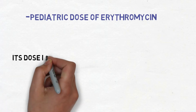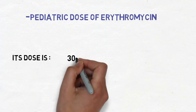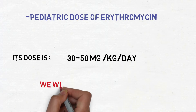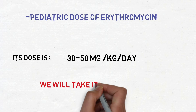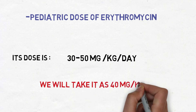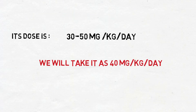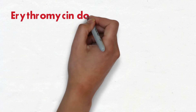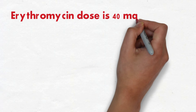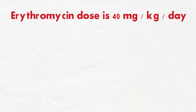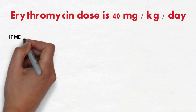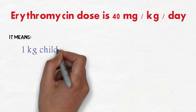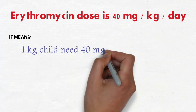The dose of erythromycin is 30 to 50 mg per kg per day. We will take it as 40 mg per kg per day. This means a 1 kg child needs 40 mg of erythromycin in one day.